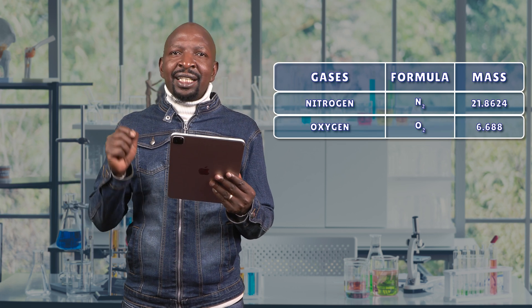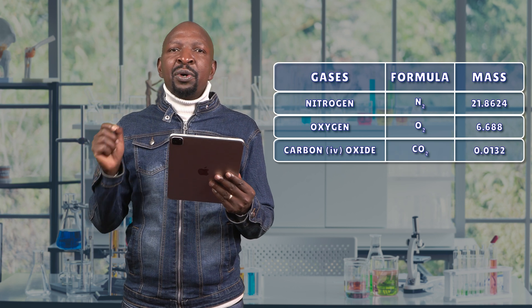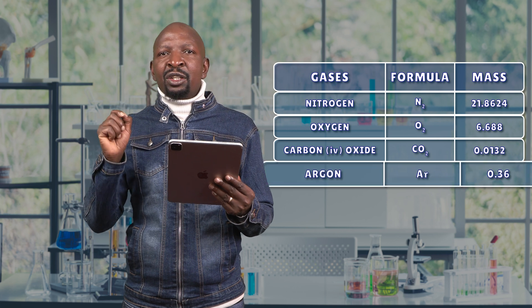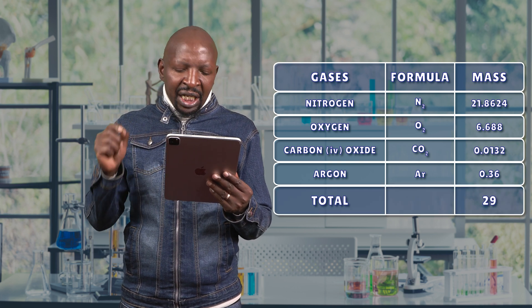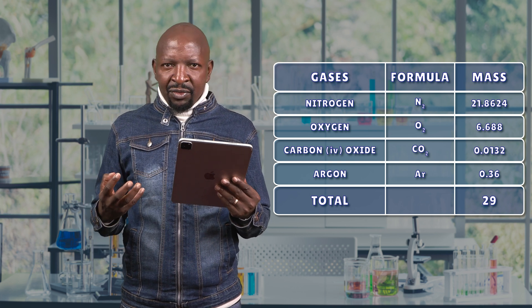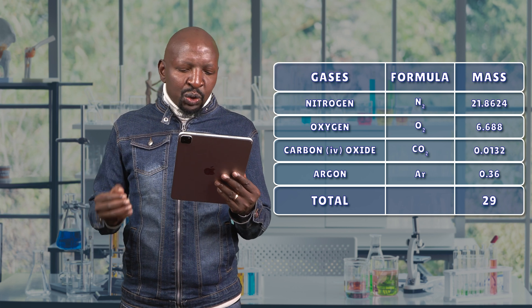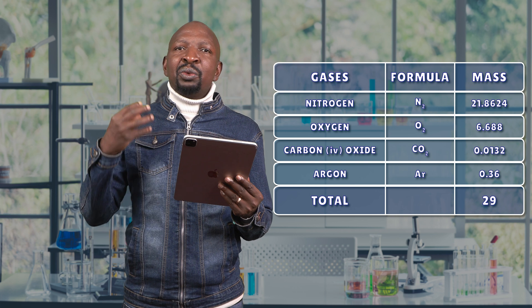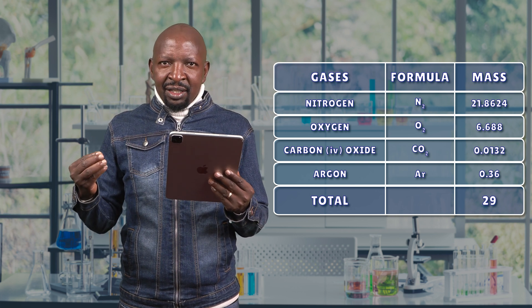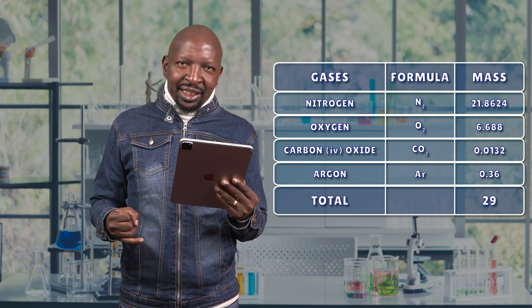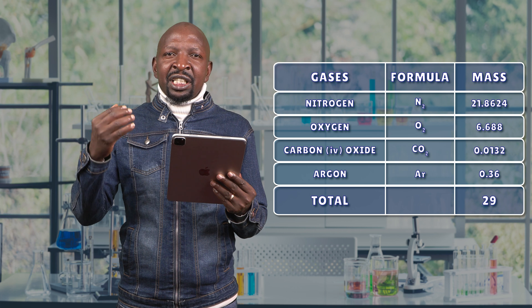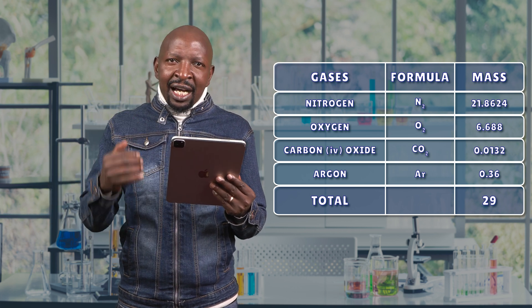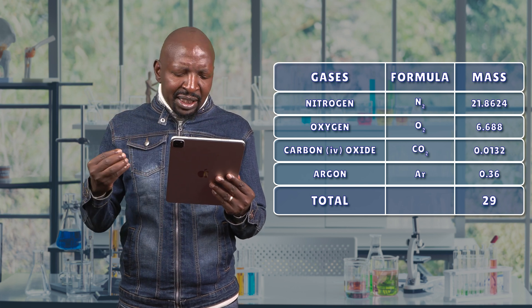When you add the contributions: 21.8624 grams from nitrogen, 6.688 grams from oxygen, 0.0132 grams from carbon dioxide, and 0.36 grams from argon, the total is 28.9236 grams. So the molar mass of air is equal to 28.9236 grams. We are assuming that one mole of air contains one mole of each of those gases — because air is a mixture — and when we add up their mass contributions we get 28.92.